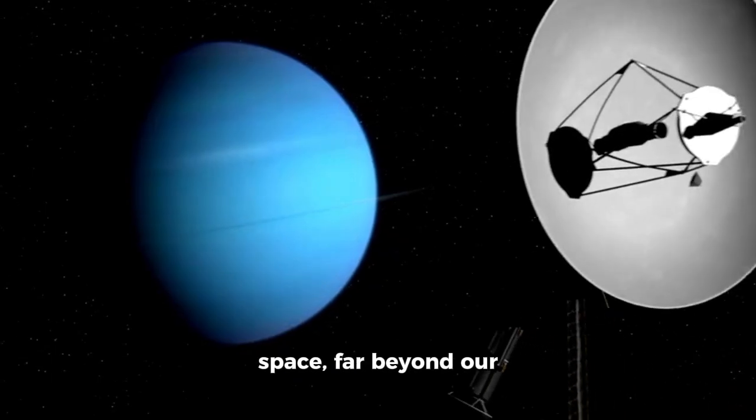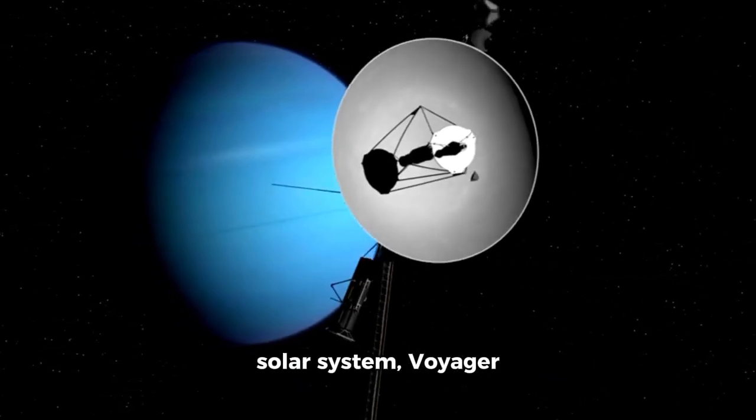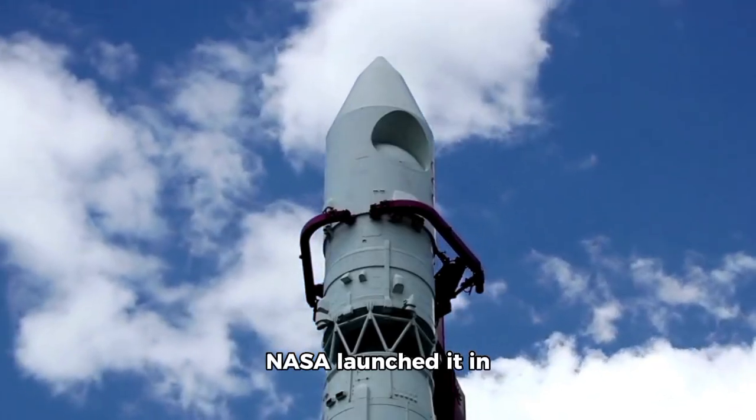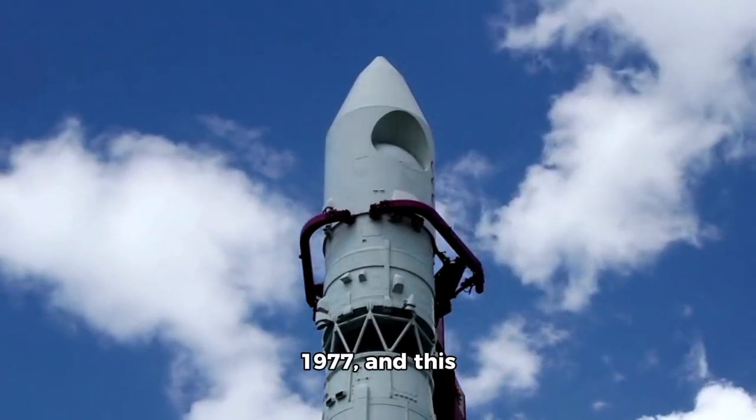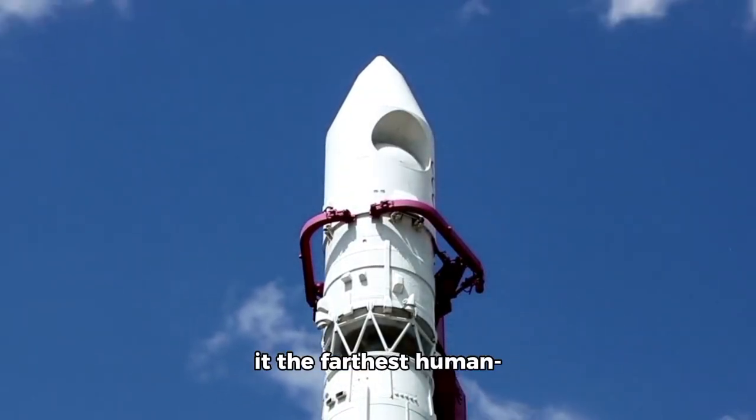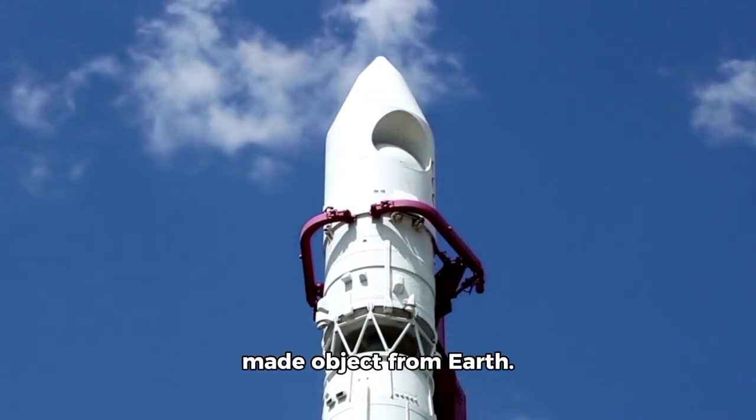In the vastness of space, far beyond our solar system, Voyager 1 continues its incredible journey. NASA launched it in 1977, and this spacecraft has been traveling for more than 47 years, making it the farthest human-made object from Earth.